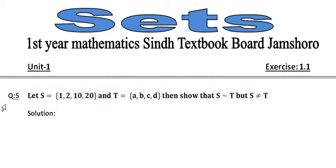Bismillahirrahmanirrahim. Assalamu alaikum to all of you. Now question number 5: Let S = {1, 2, 10, 20} and T = {a, b, c, d}, then show that S is equivalent to T but S is not equal to T.